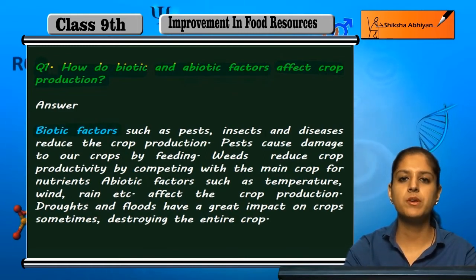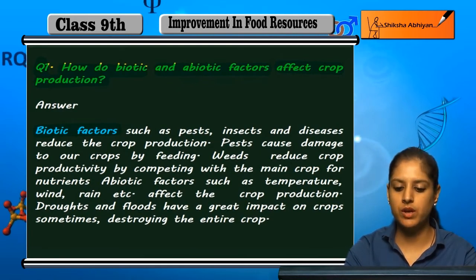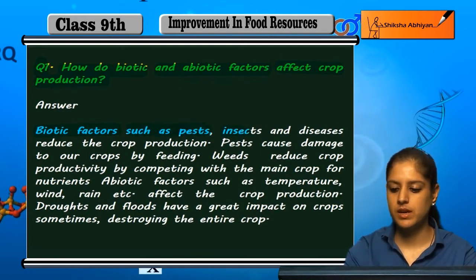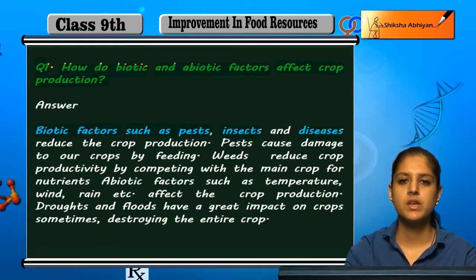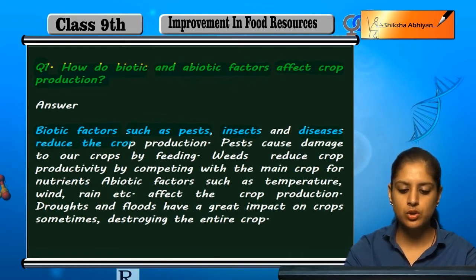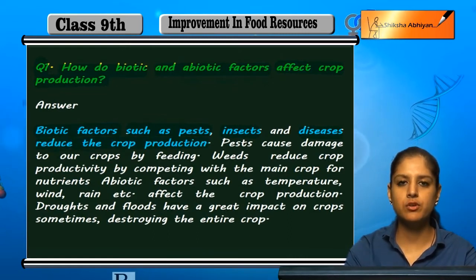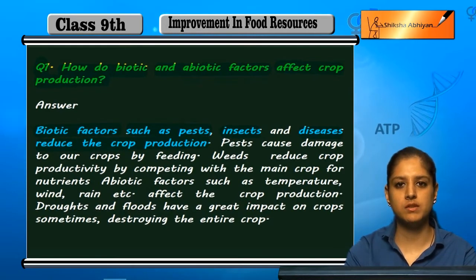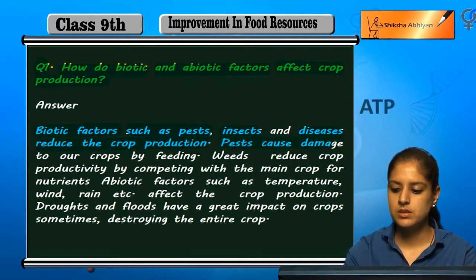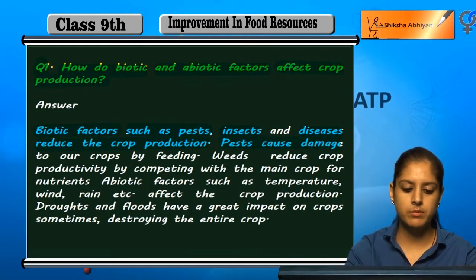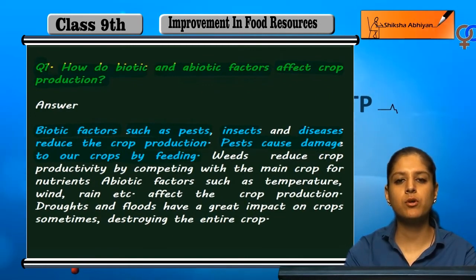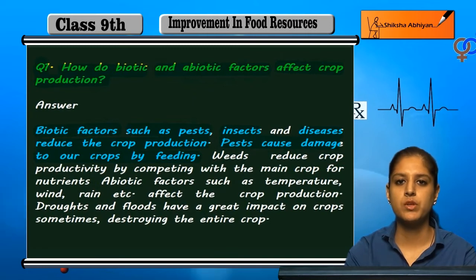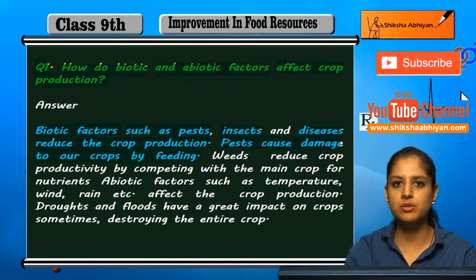The biotic factors which can affect crop production include pests, insects, diseases, etc. Crop production is reduced due to these factors. Pests cause damage to our crops by feeding on them, which is why the crop is damaged.